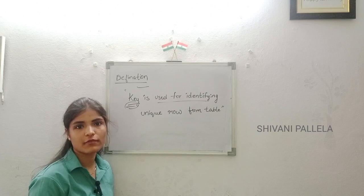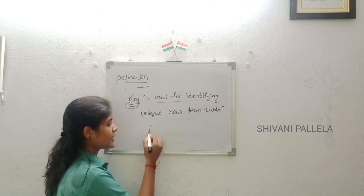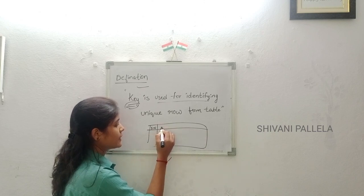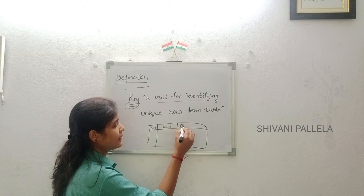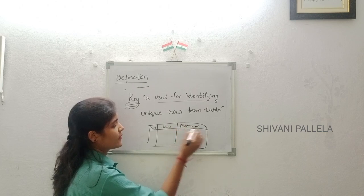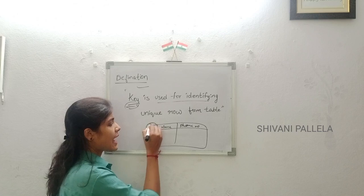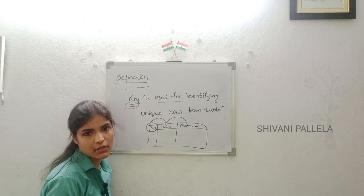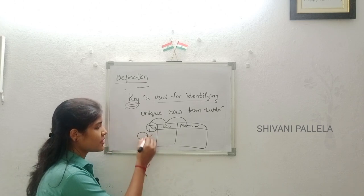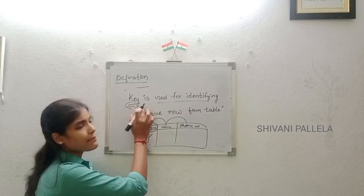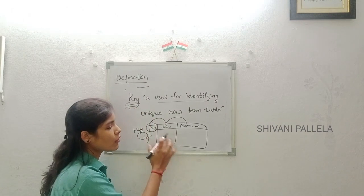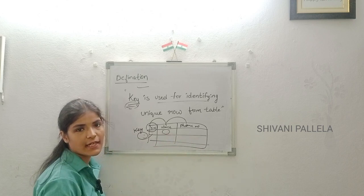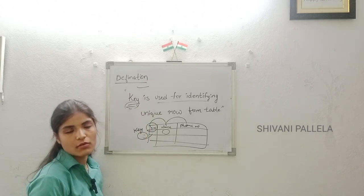A key will identify the particular row which we want. For example, in a table I have student number, hall ticket number, name, and phone number. If I enter the student hall ticket number, I will get their name and phone number. So the hall ticket number is the key — it is used to identify a particular row, not a column.